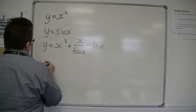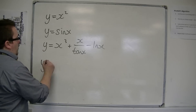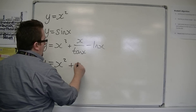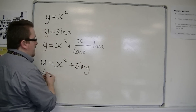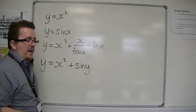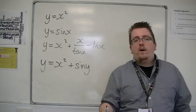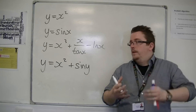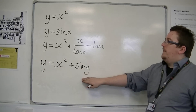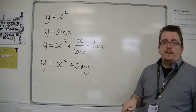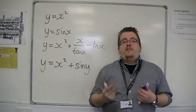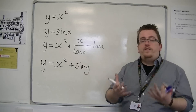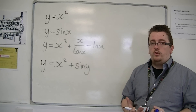If, however, I then put something like y is equal to x squared plus sin y, I no longer have y as an explicit function of x, because I've got y equal to something that includes both x and y. So now it is not an explicit equation, and it is referred to as an implicit equation.